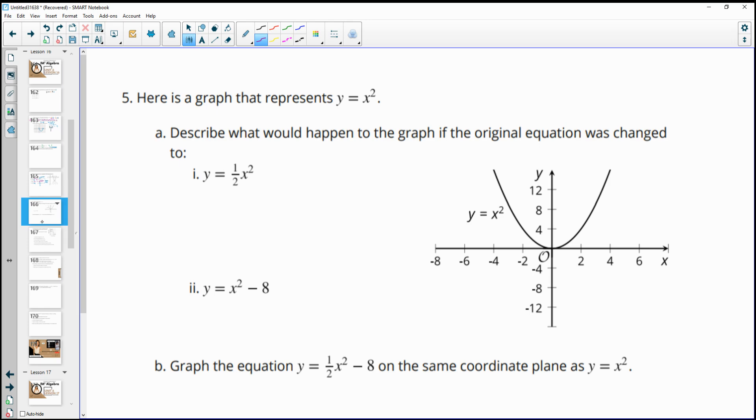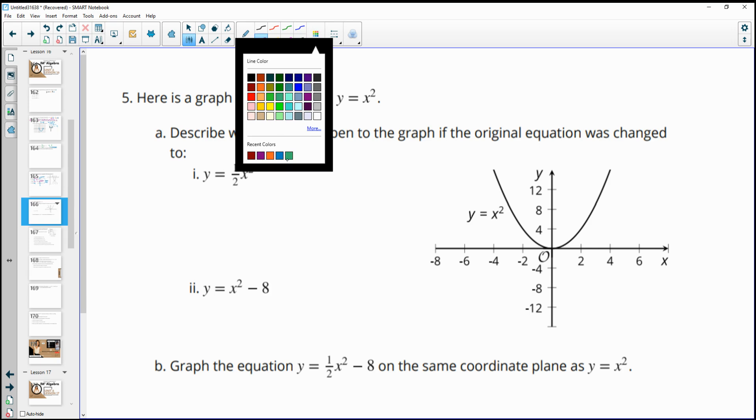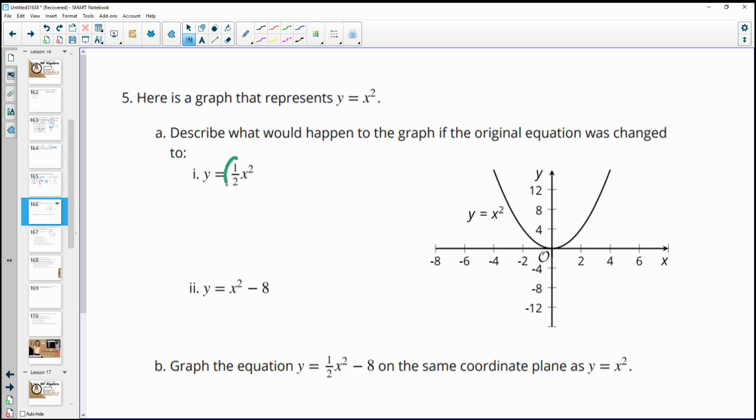Number five, here's a graph that represents y equals x squared. Describe what would happen to the graph if the original equation was changed to 1/2 x squared. So when we have that number out front, so 1/2 is between 0 and 1. So this is going to be flatter or it's going to make it, you know, less steep or less skinny. So it's going to widen it. So if you want to just think about what it'll actually look like, it's going to be widened.